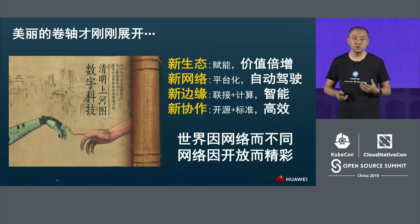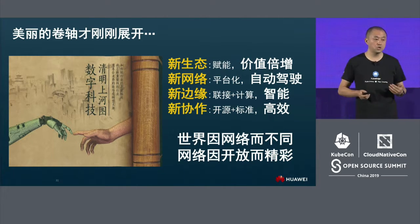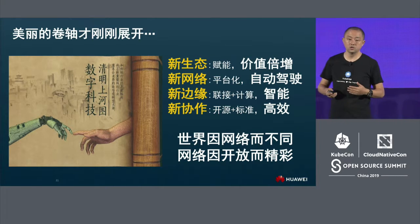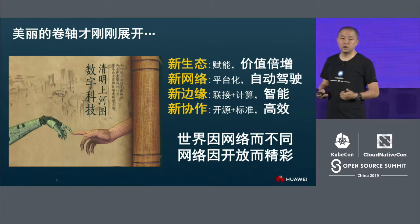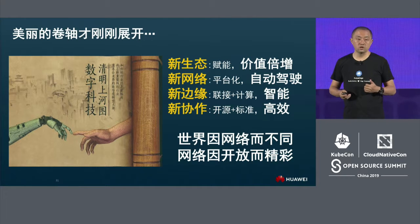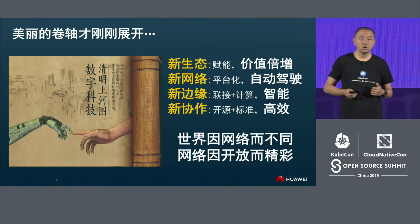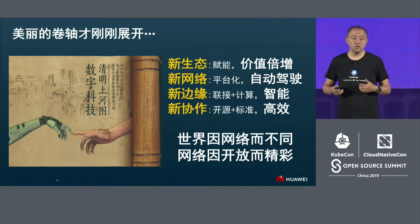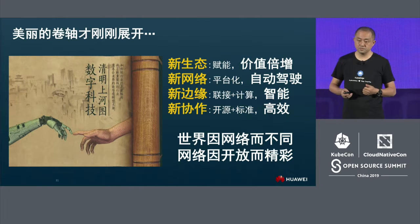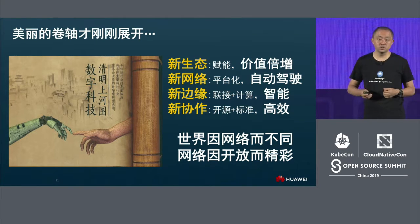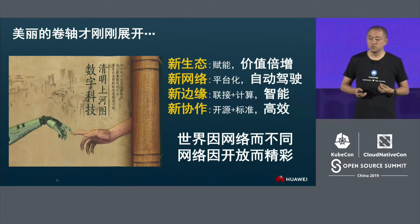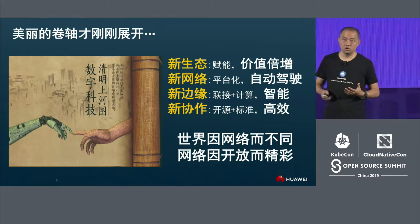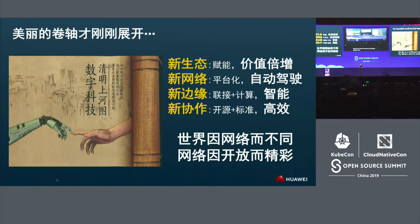This is the digital technology era. I believe ICT needs to work together with traditional industries to build a harmonized and open platform and enable digitization. There are four key points: a new ecosystem with empowerment and value promotion; network as a platform to build an automatic driving network; connection and computing with improved intelligence; and new collaboration through open source and standards to build an efficient work pattern. The new world is in front of us — industrial digitization has more and more possibilities, and the world will be changed by the network.